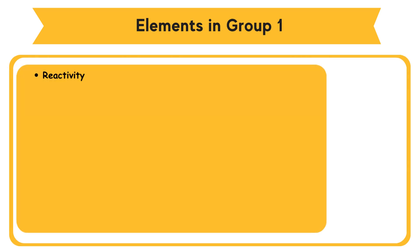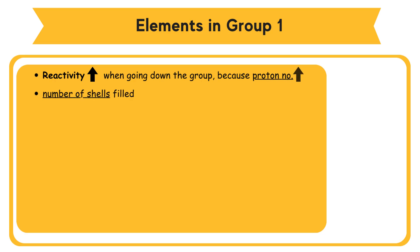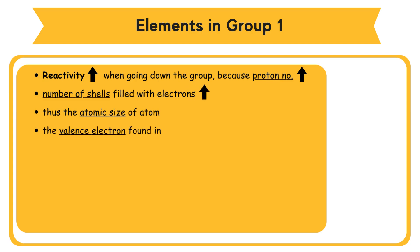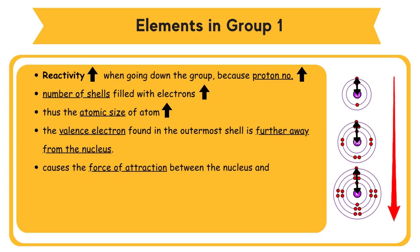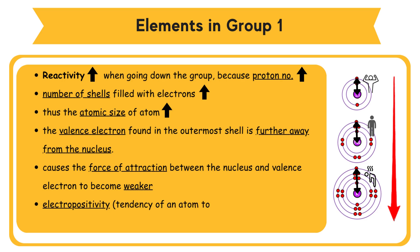The reactivity of Group 1 elements increases when going down the group because the proton number increases, the number of shells filled with electrons increases, thus the atomic size of the atom increases. The valence electron in the outermost shell is further away from the nucleus. Increasing atomic size causes the force of attraction between the nucleus and valence electron to become weaker, so a bigger atom can release its valence electron more easily. The electropositivity — the tendency of an atom to donate its valence electron and form a metal cation — of alkali metals increases down the group.